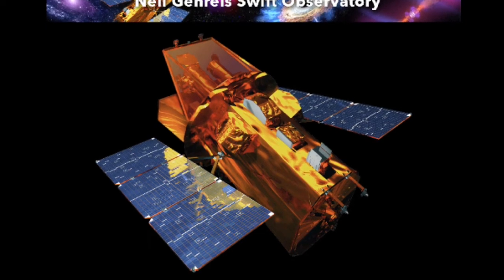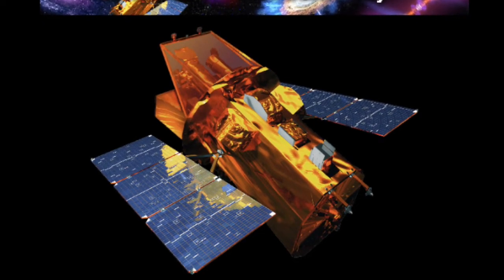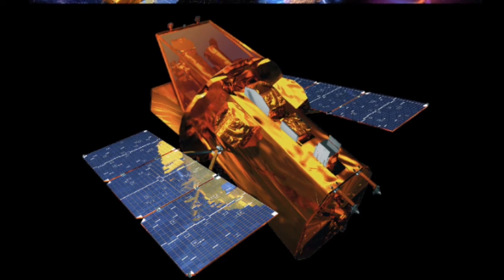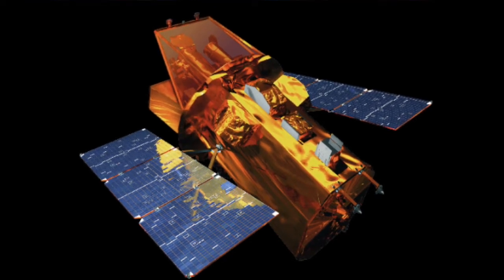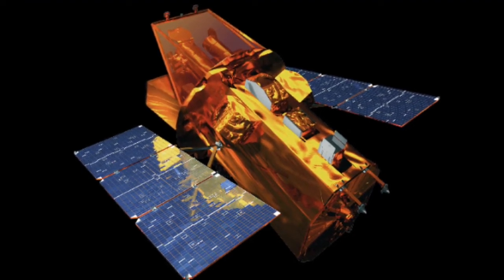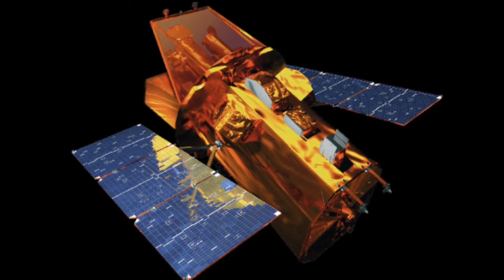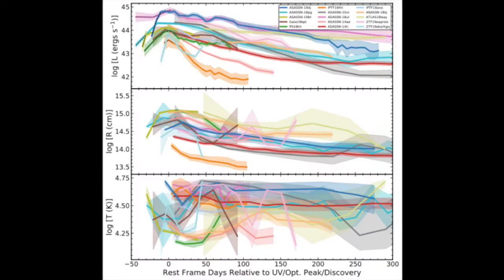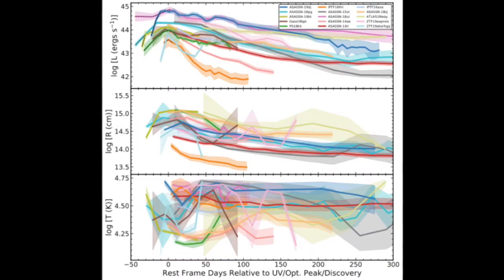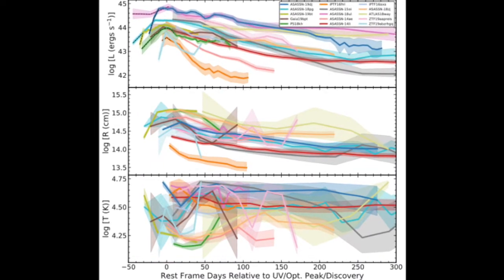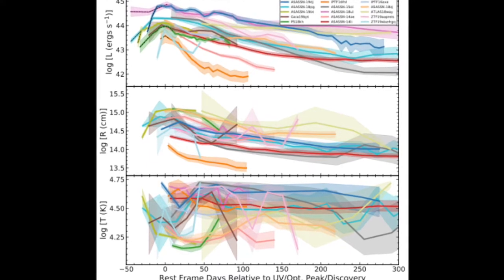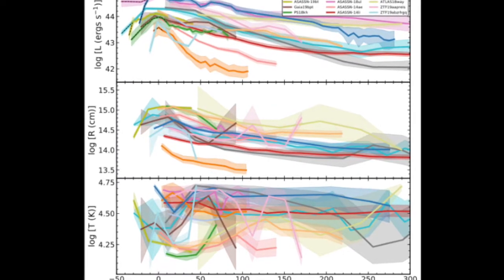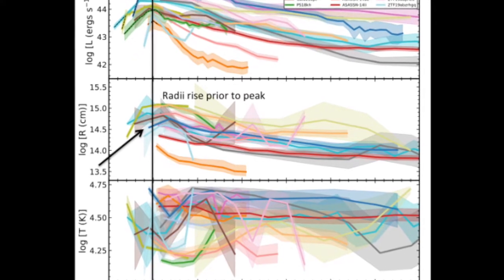To be included in our sample, we require that each TDE has 15 epochs of Swift observations in all UV filters so that we can accurately fit the UV and optical emission as a black body. Here we show MCMC fits to each of our Swift epochs, where we show best-fit bolometric luminosity and effective black body radius and temperature.